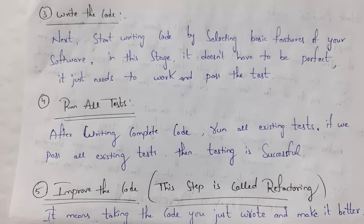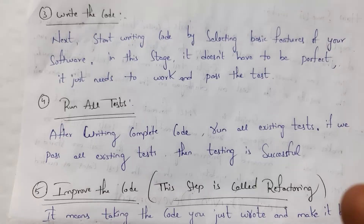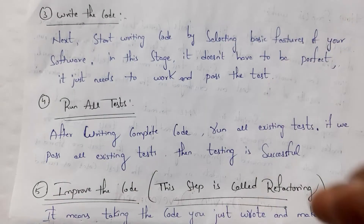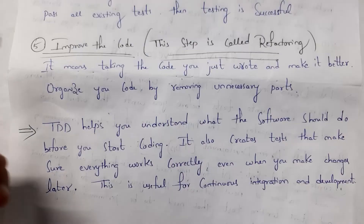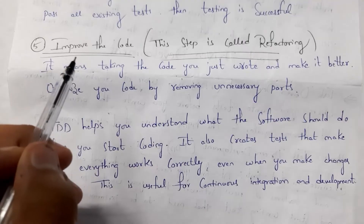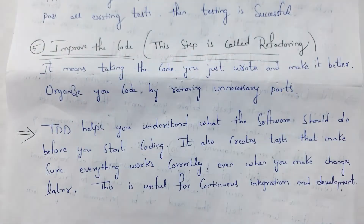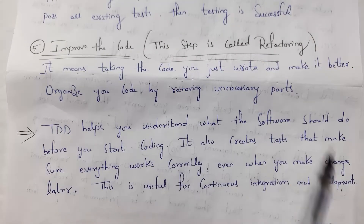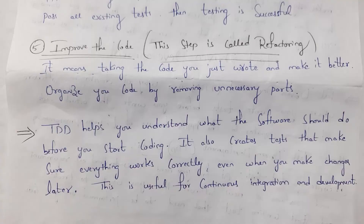The third step is to write the code. There is no need to develop complete software immediately — just develop software with only basic features and then perform testing; your software should now pass. The fourth step is to run all tests. After developing the software, perform various kinds of testing; if all tests pass, your testing is successful. The fifth step is to improve the code, also called refactoring — arranging code in proper format and removing unnecessary files. TDD is very useful in continuous integration and continuous deployment because new software versions are released frequently.